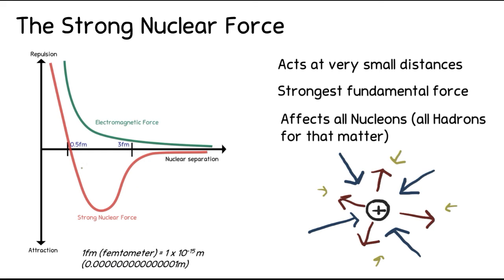One femtometre is 1 × 10⁻¹⁵ metres — it's a very small number and is just about the size of a small nucleus. About 3 femtometres is about the size of a medium-sized nucleus, and that's when the strong nuclear force is active.